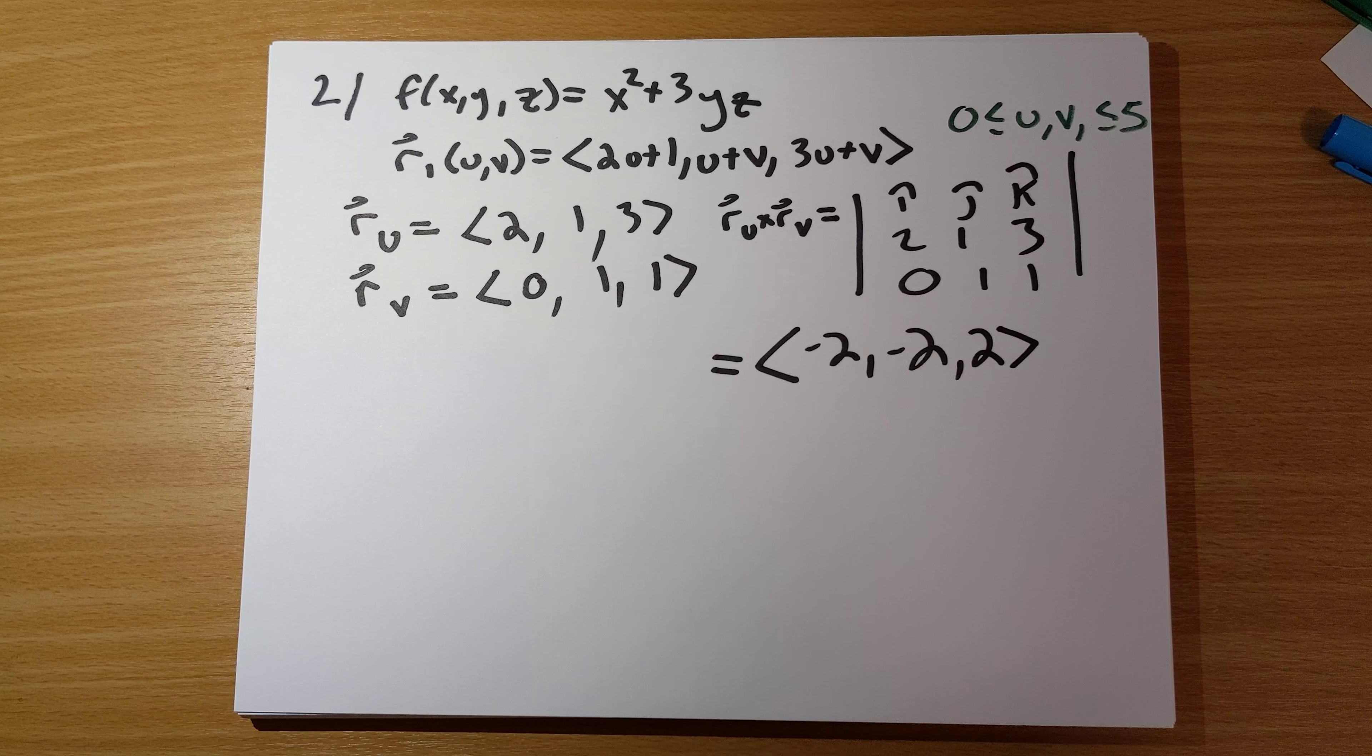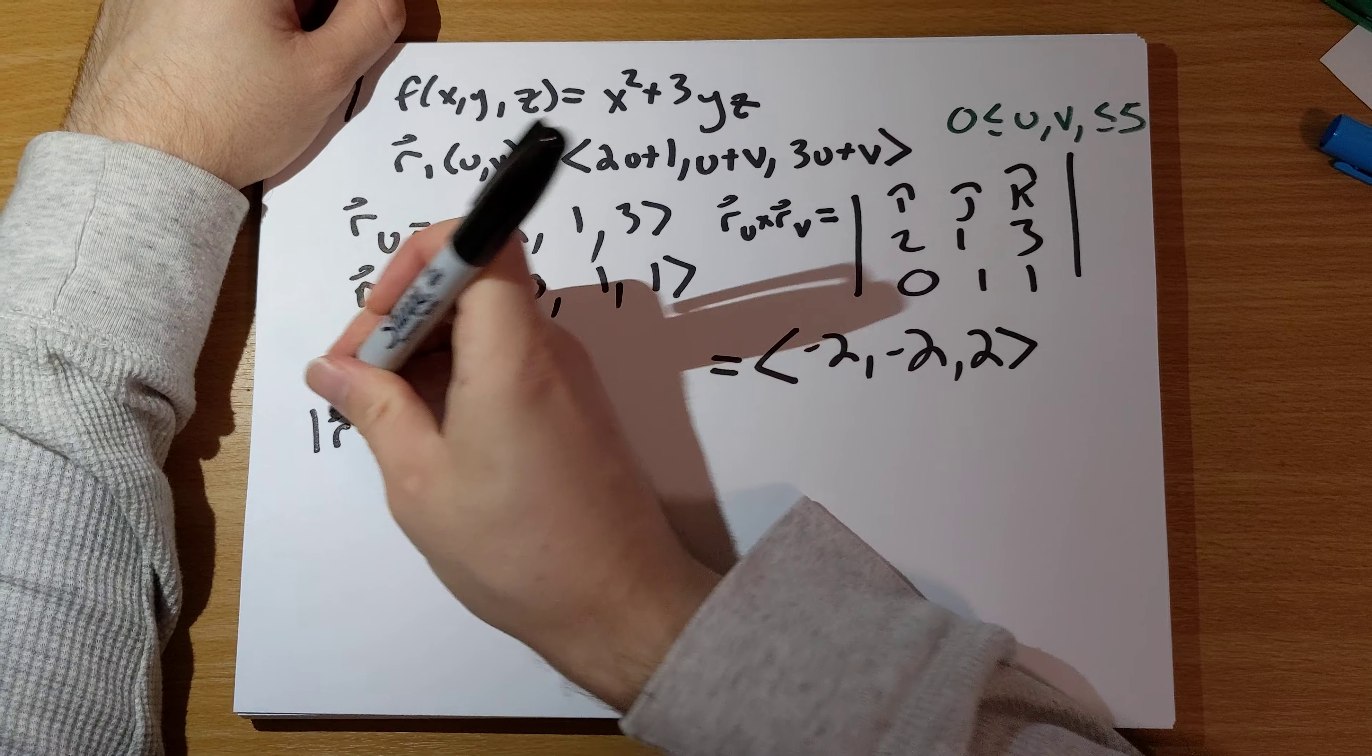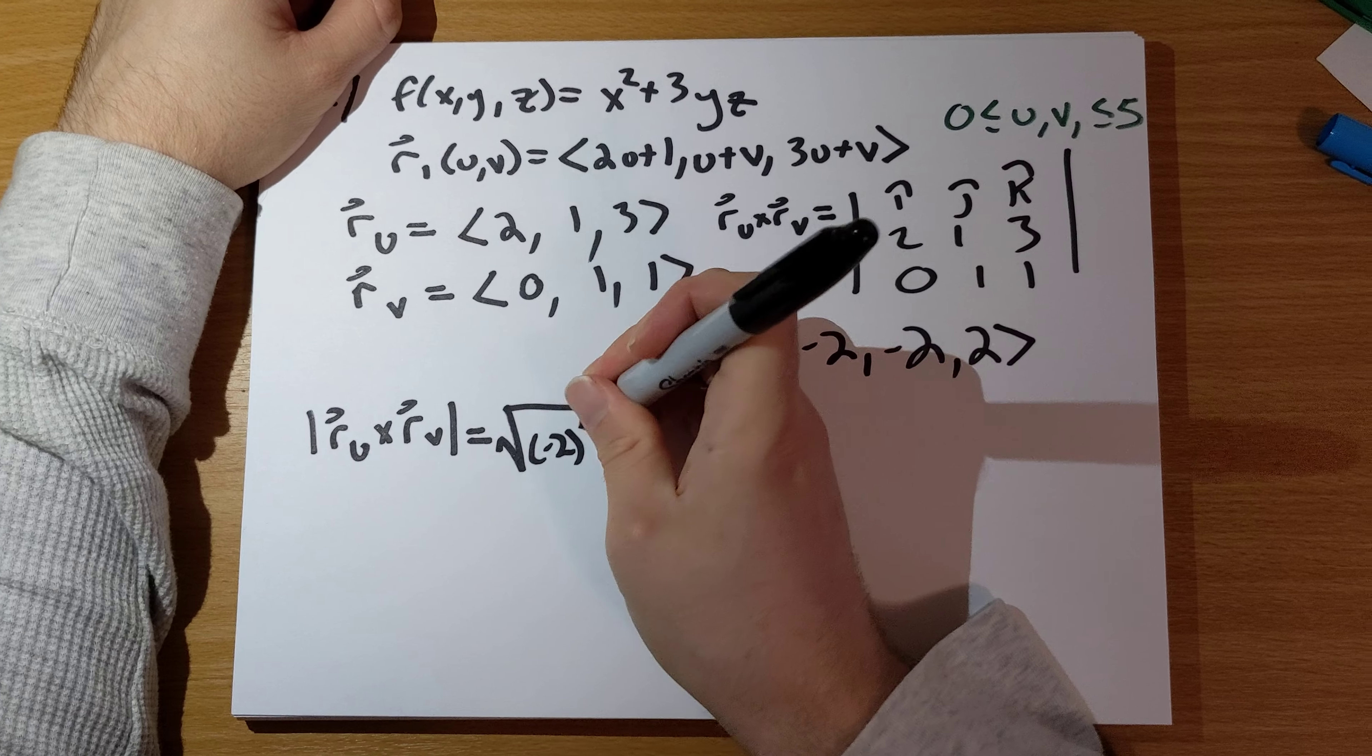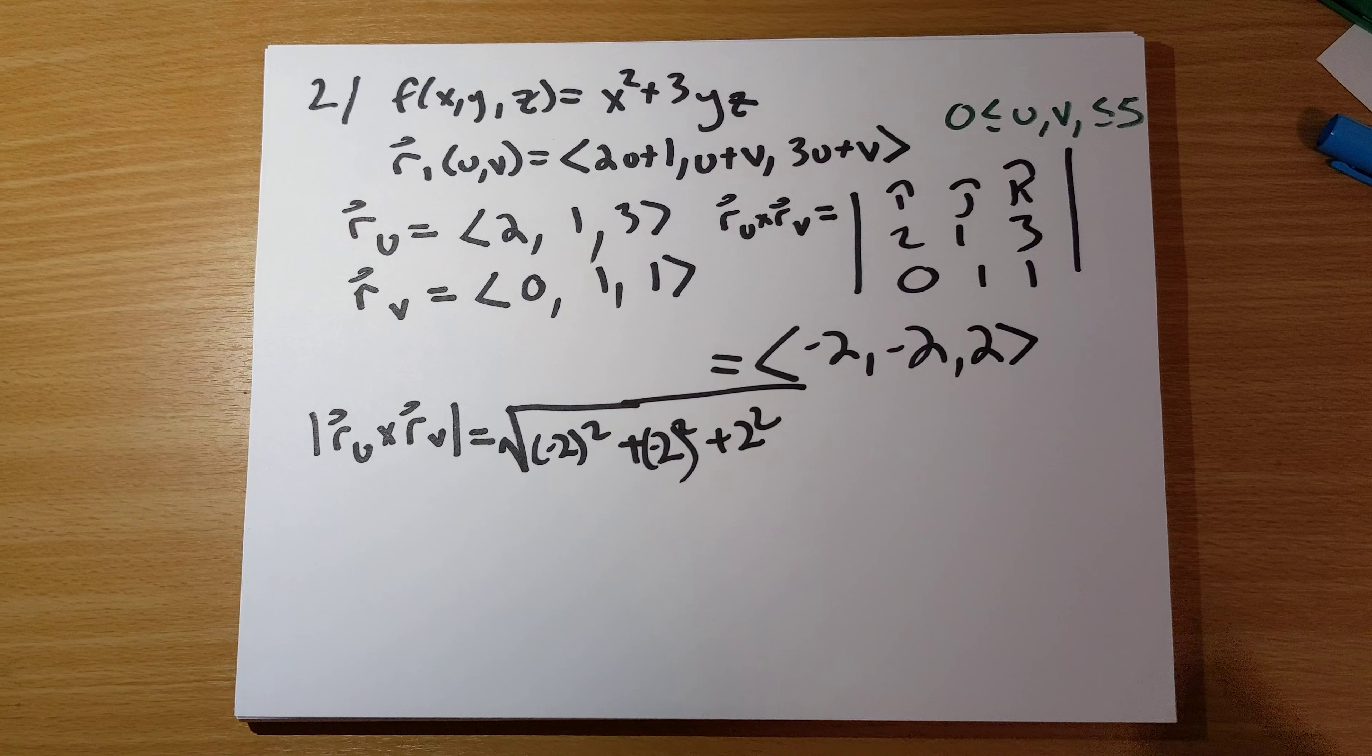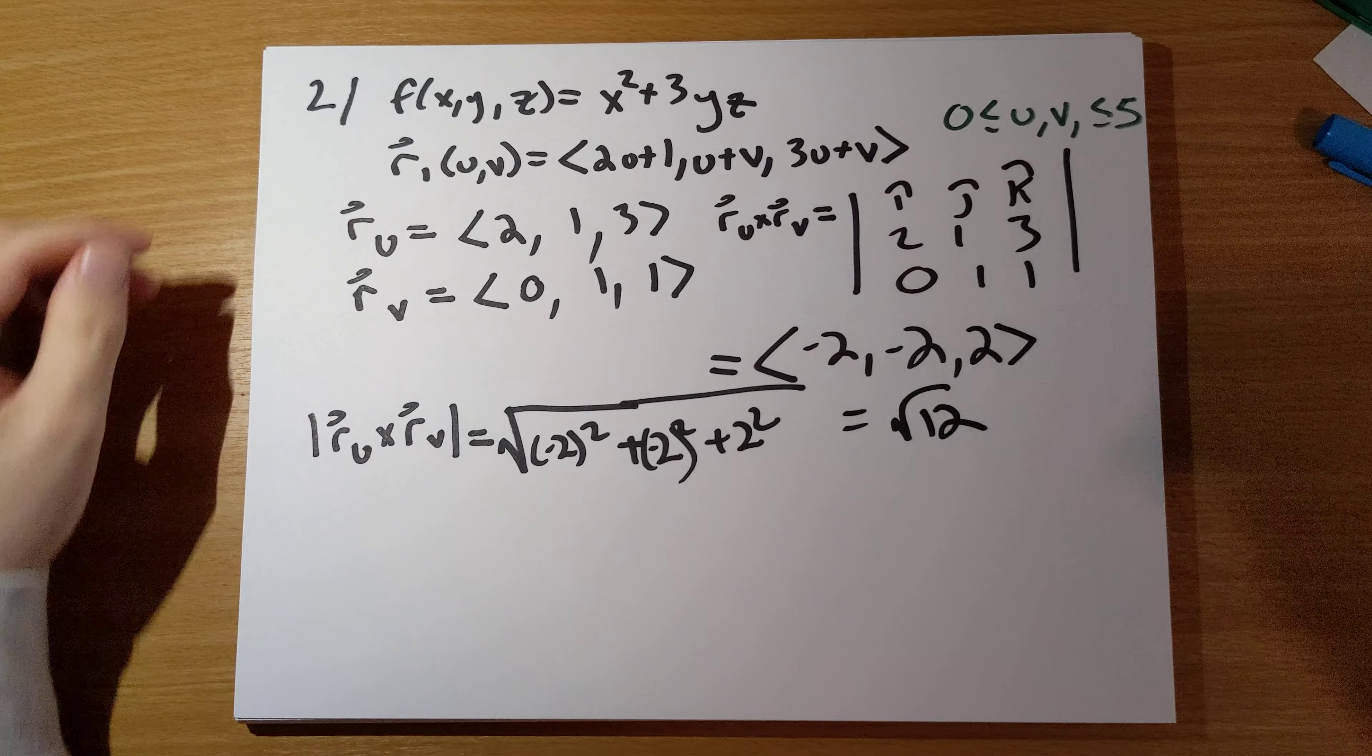This is a scalar surface integral. How do we take care of scalar surface integrals? We multiply, we're going to need the magnitude of this. So, we're going to have the magnitude here is negative 2 quantity squared plus negative 2 quantity squared plus 2 squared. So, this is going to be 4, 4, 4 square root 12 here for the factor that we throw in.